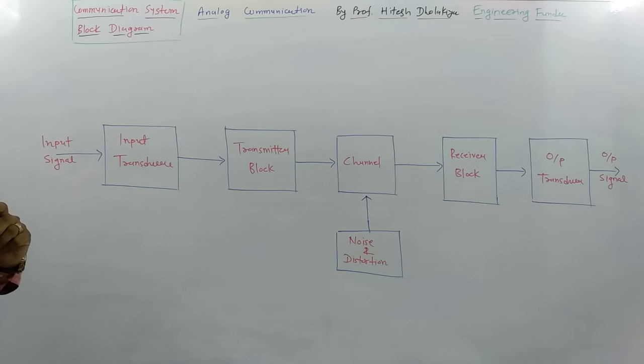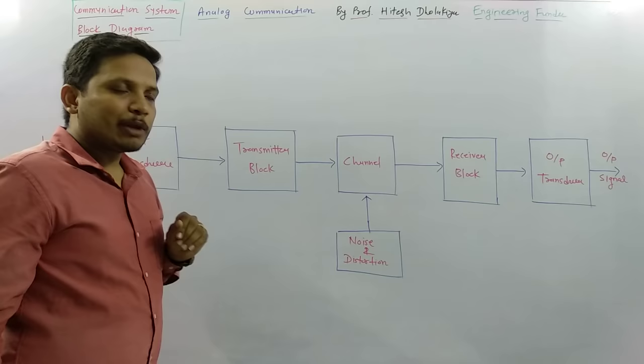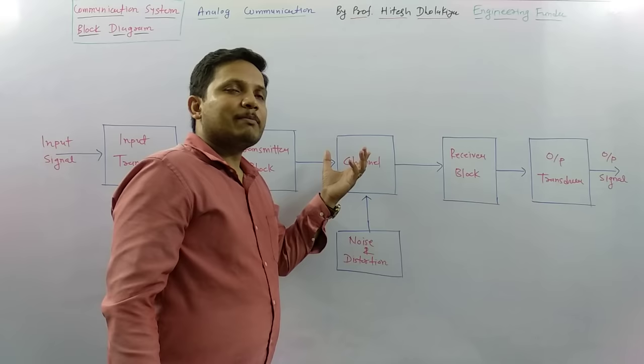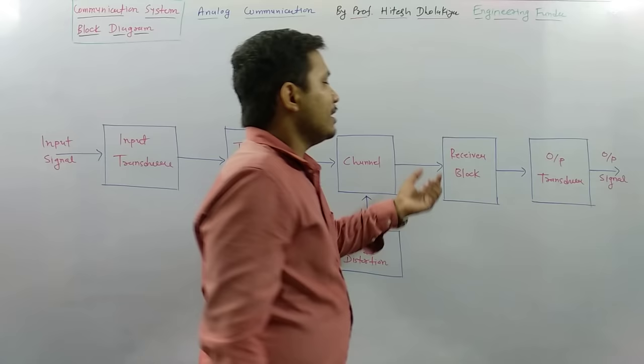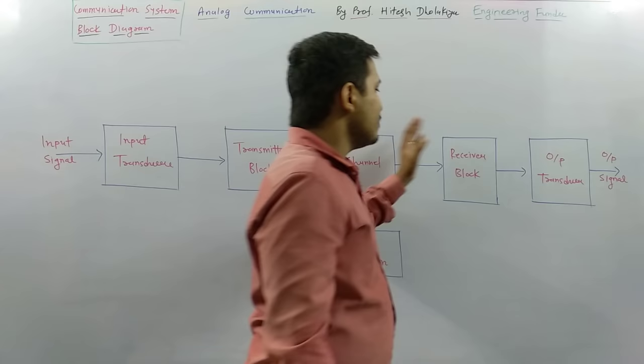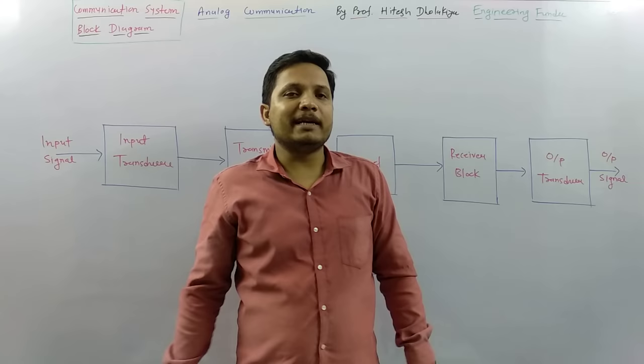If you see the block diagram of a communication system, we have an input signal — that is the message signal — which is first given to an input transducer, then it goes to the transmitter block. We send that signal into the channel, where noise and distortion get added during propagation. The receiver block then translates the received signal to a manageable signal, which is given to the output transducer to produce the output signal — the same information signal that was sent at the input side.